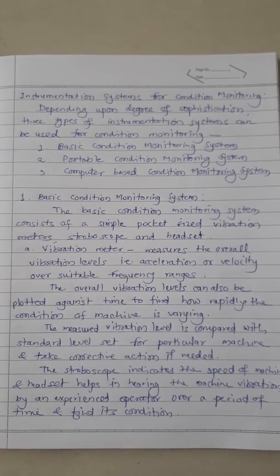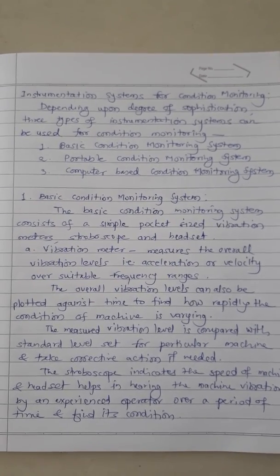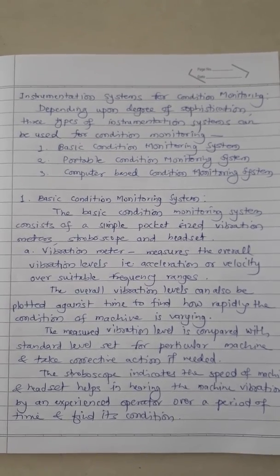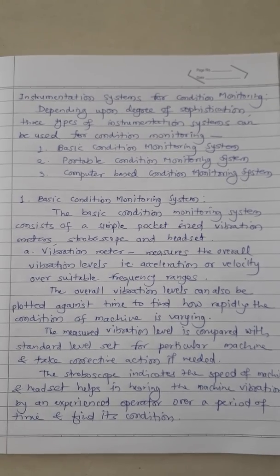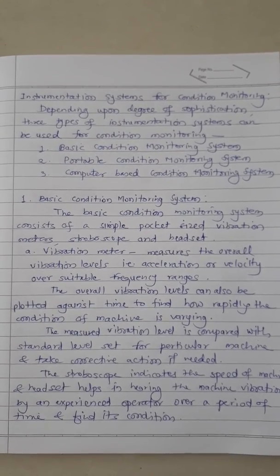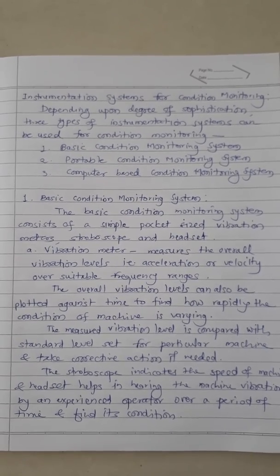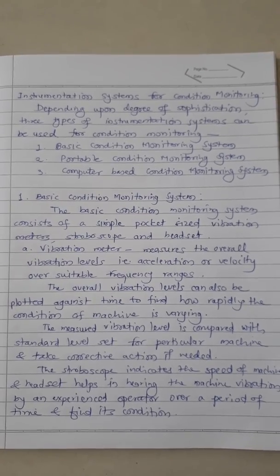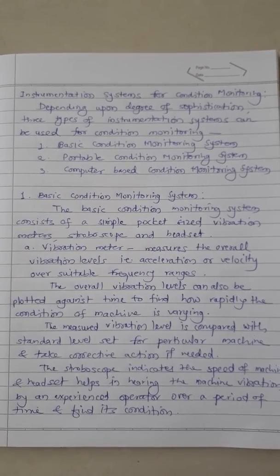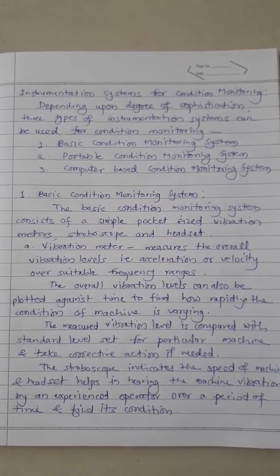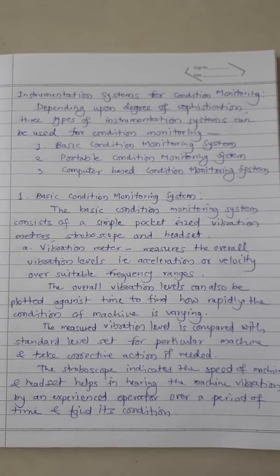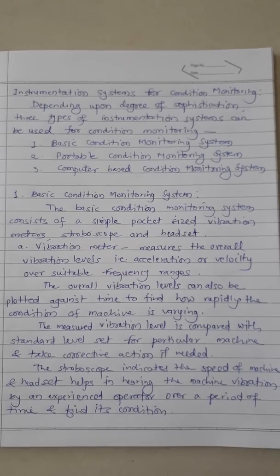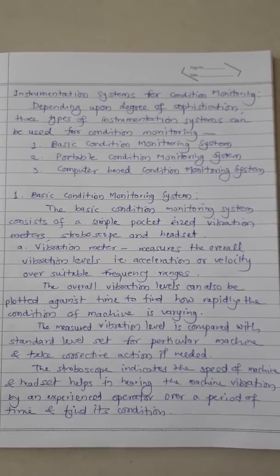The basic condition monitoring system consists of a simple pocket-sized vibration meter, stroboscope, and headset. The vibration meter measures the overall vibration level, i.e., acceleration or velocity over broadband frequency ranges. The overall vibration levels can also be plotted against time to find how rapidly the condition of the machine is varying. The measured vibration level is compared with a standard level set for a particular machine and corrective action is taken if needed. The stroboscope indicates the speed of the machine and the headset helps an experienced operator in hearing the machine vibration over a period of time to find its condition.